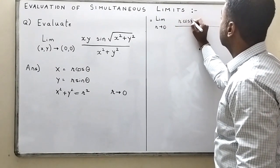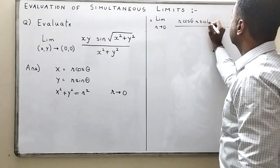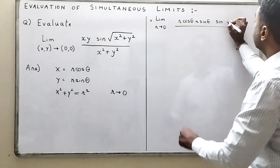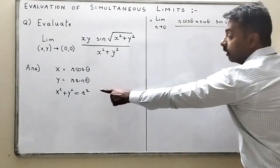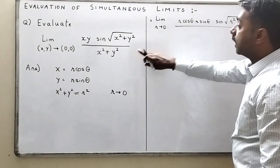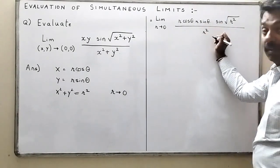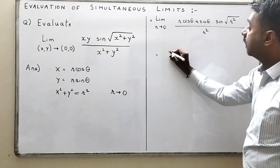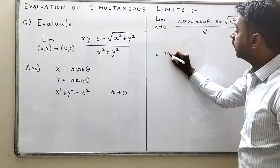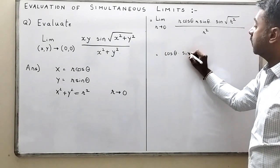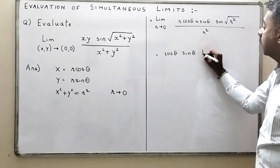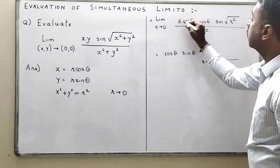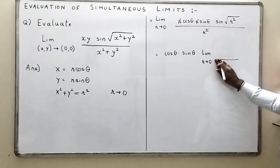So this limit becomes limit r → 0 of (r cosθ)(r sinθ) · sin(√(x² + y²)) divided by (x² + y²). Since x² + y² = r², this is sin(√r²) / r² = sin(r) / r². The r² in the denominator and r² from xy combine, and after cancellation we are left with sin(r).